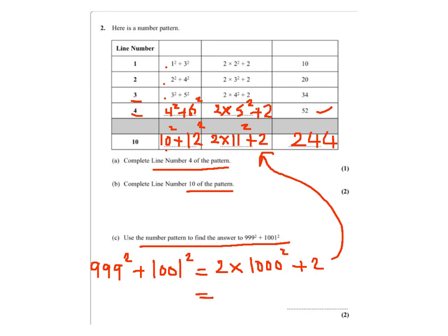Now using this formula we get 2 million and 2, which we can write as 2, 0, 0, 0, 0, 0, 2.